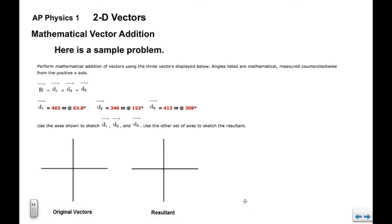Now we have a blank set of axes here just for you to draw, sketch the vectors so you know where they are. d1 is in quadrant one, d2 is in quadrant two, d3 is in quadrant three.